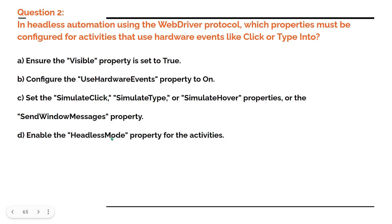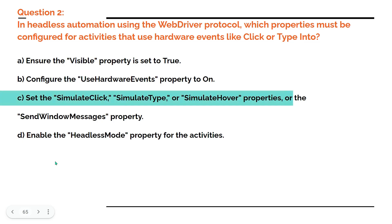Pause this video and comment your answer. Let's test your knowledge from the previous video. The answer for question number two is C: set the simulate click, simulate type, simulate hover property, or the send windows message property. This is a very important question on this particular paragraph. Thank you for watching — let's move on to our next topic.